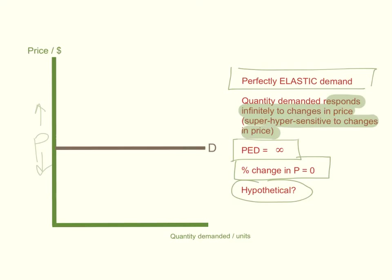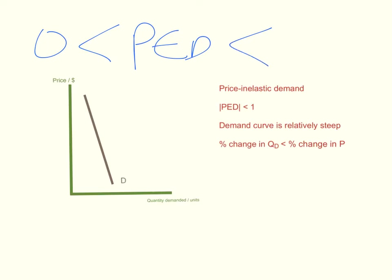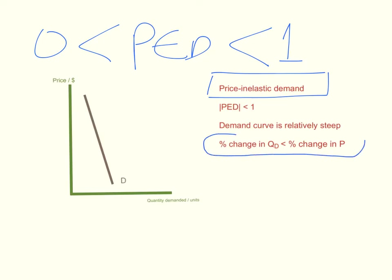This might appear like a hypothetical scenario, and there aren't that many examples, but we will see a demand curve that looks like this later on in microeconomics. When price elasticity of demand falls between 0 but is less than 1, we say that this product has price inelastic demand. This happens when the percentage change in quantity demanded is smaller than the percentage change in price. In that case, you will have a rather steep demand curve, and the absolute value of price elasticity of demand will be less than 1.